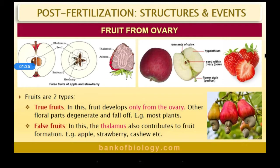Fruits are of two types mainly: true fruits and false fruits. True fruits develop only from the ovary. Other floral parts — petals, sepals — degenerate and fall off, and only the ovary remains, which develops into fruit. Most plants belong to this category of true fruits.